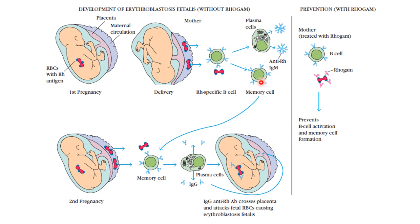During the second pregnancy, if the fetus is again Rh positive, the RBCs of the fetus contain the same type of antigen. The mother's blood is now carrying memory cells. If the fetal RBCs again reach the maternal circulation, they will come into contact with these memory cells. The memory cells know which type of antibody should be produced against these RBCs.